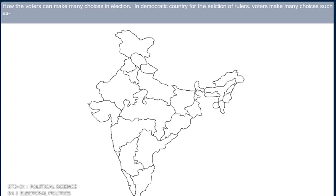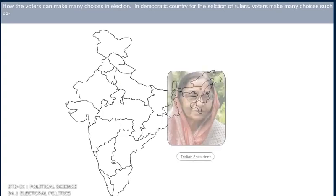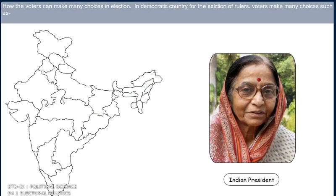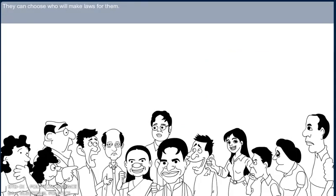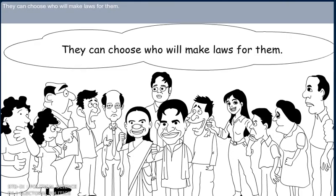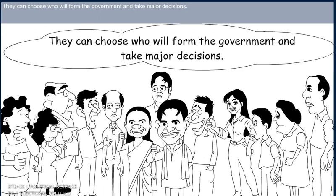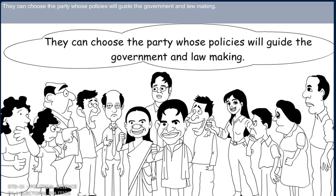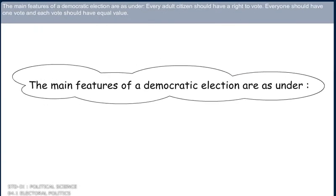How voters can make many choices in an election. In a democratic country, for the selection of rulers, voters make many choices: they can choose who will make laws for them, they can choose who will form the government and take major decisions, and they can choose the party whose policies will guide the government and lawmaking.